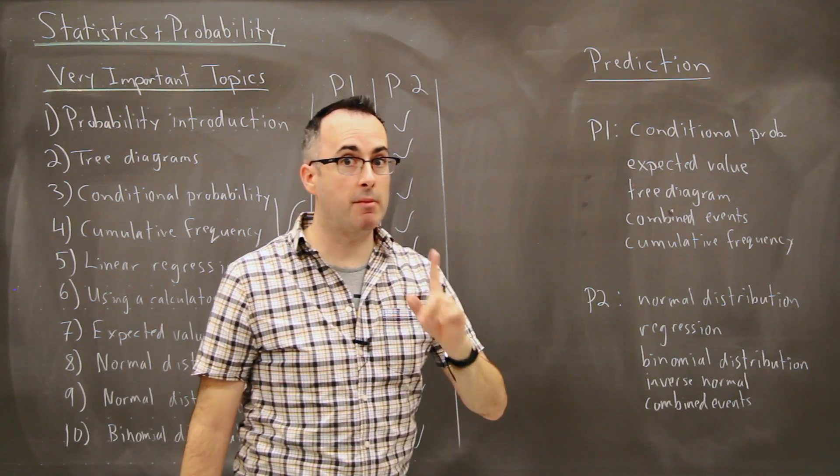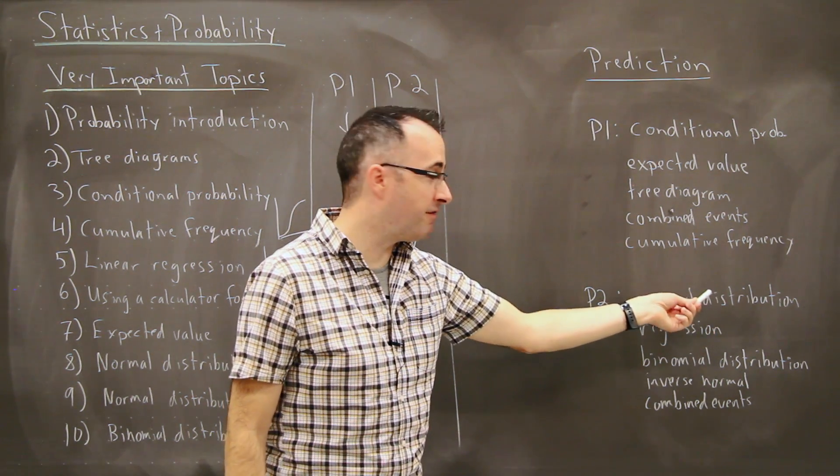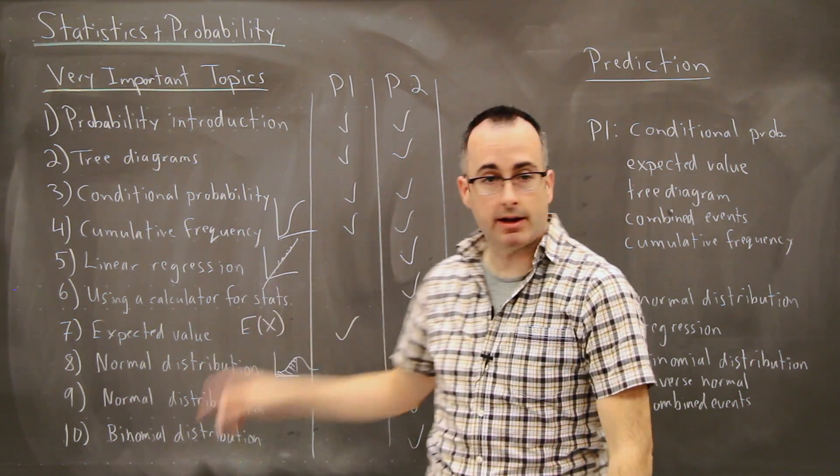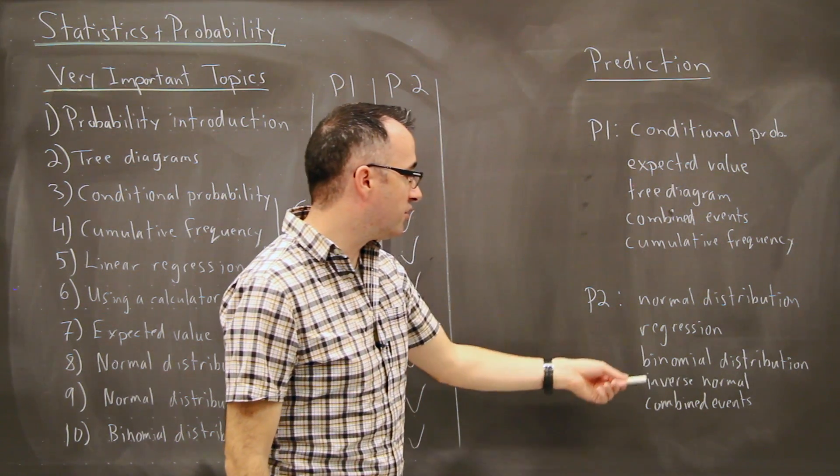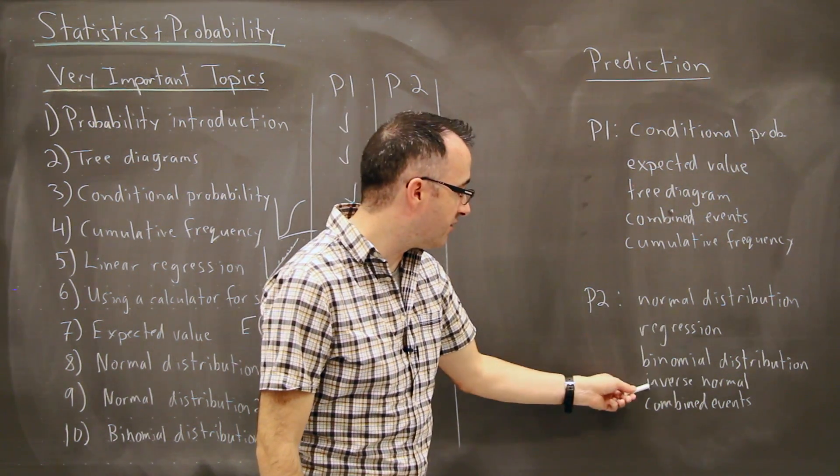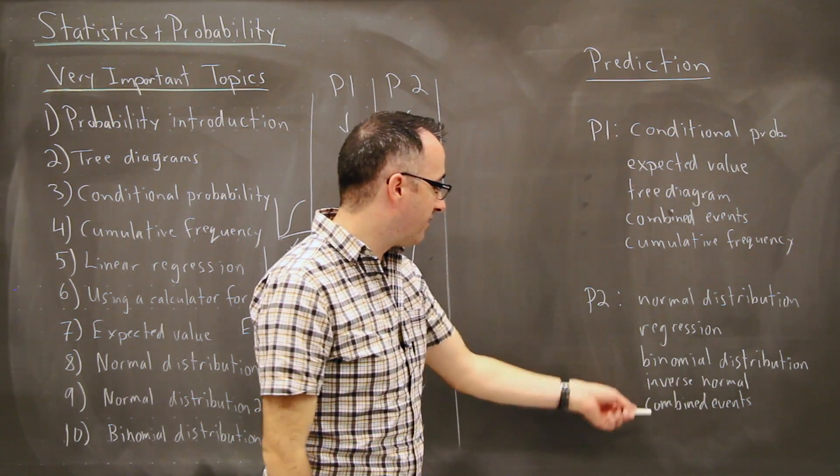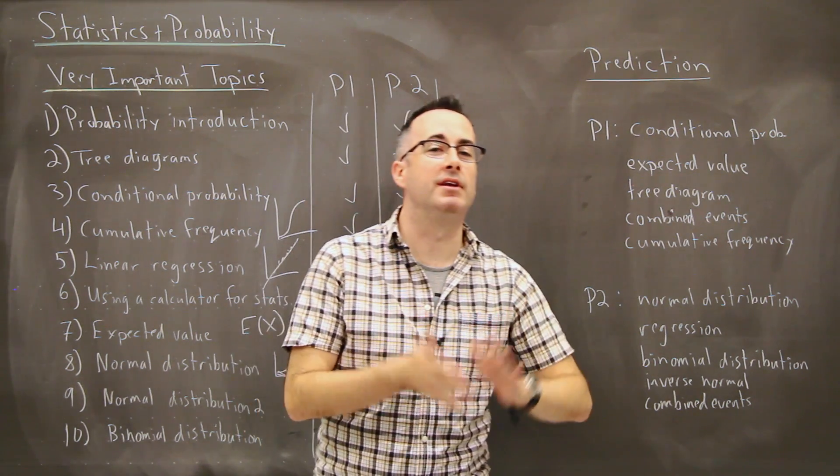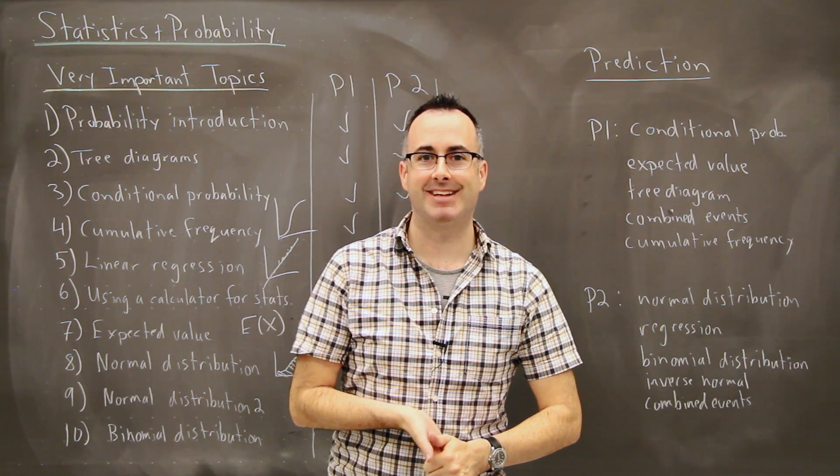But for paper two the most common thing by far is normal distribution. That shows up very often on paper two. Next most common is linear regression. So finding this equation of the line. After that we have binomial distribution. And after that comes inverse normal. In other words this is the harder version of normal distribution. This inverse normal, that's this normal distribution two. And then last we have combined events. So these are the most commonly occurring things and most probable different topics in this order for your next exams. Let's get started.